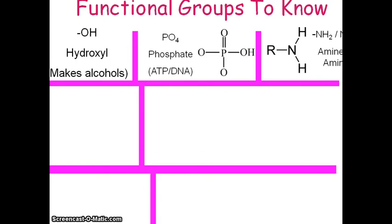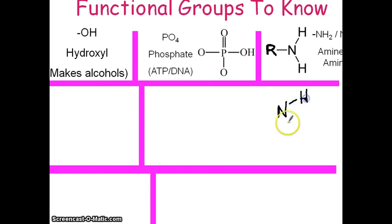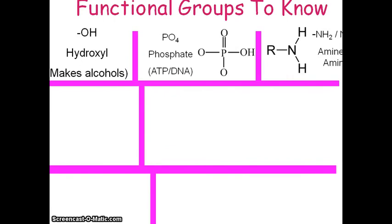This is called an amine or amino group. The R is not an element — R just represents whatever it's attached to, like X as a variable in algebra. The actual amino group is the NHH, connected to something. You've heard of amino acids — they're the building blocks of protein. Why are they called amino acids? Because every one of them has an amino group on it. That's where the name amino acid comes from.